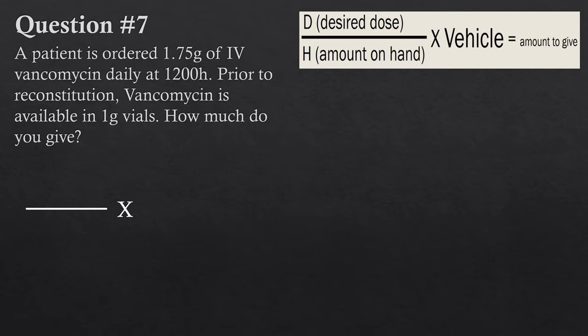Question seven: a patient has ordered 1.75 grams of IV vancomycin daily at 1200, prior to reconstitution. Vancomycin is available in one gram vials. How much do you give? Give it a shot yourself. Starting with the formula: the desired dose is 1.75 grams — that's what the patient has ordered — so we put that at the top.